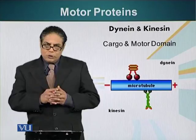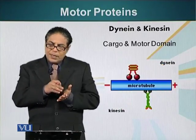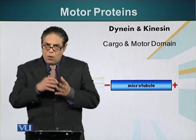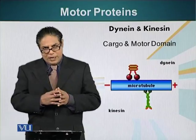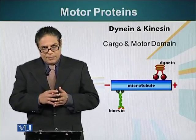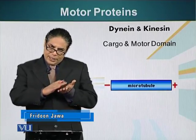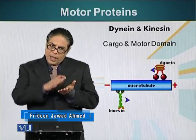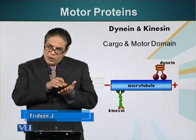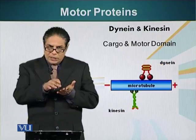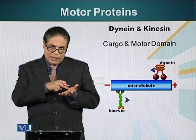Motor proteins have two domains. They have a motor domain that is attached to a microtubule, and they have a cargo domain onto which cargo — whatever material or organelle that needs to be transported — is attached. The motor domain of a motor protein can recognize the surface of the microtubule, and just by looking at the surface, the motor protein knows in which direction the plus end of the microtubule lies and in which direction the minus end of the microtubule lies.